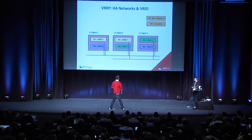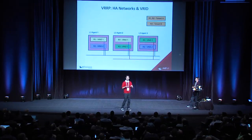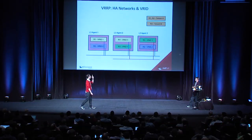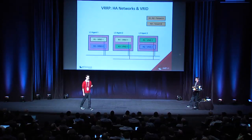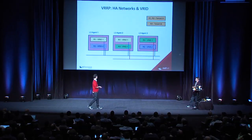Between different tenants, we can segment the VRRP traffic because each tenant has its own network. But inside a single tenant — for example, if router one and router two belong to the same tenant — we allocate a unique VRID per router, which is what you can see in the diagram.